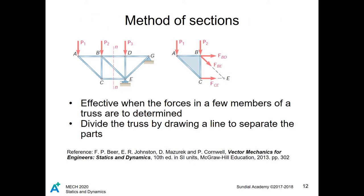The next method we will cover is the method of sections. The method of sections involves taking a cut through the beams of which we would like to know the values of, and has the advantage of being able to solve only a certain subset of beams, as opposed to an iterative and time-consuming method like the method of joints. Some things to keep in mind when solving with the method of sections is that you will be solving questions with both moment and force equilibrium applied at various points. Remember that when a force points to or from a moment point of interest, the moment of that force about that point is zero.